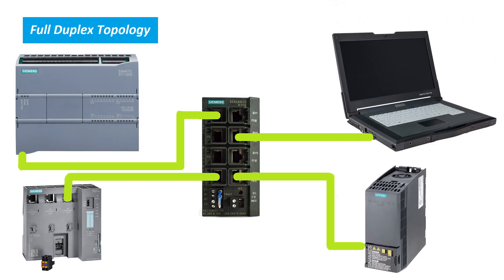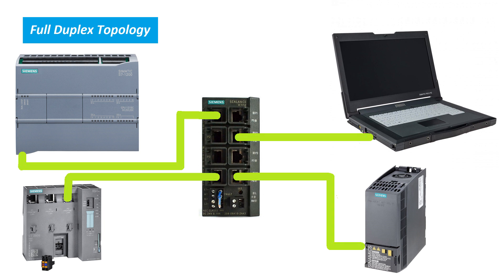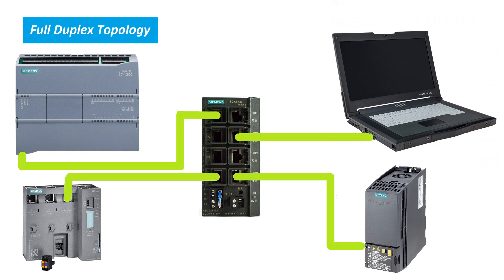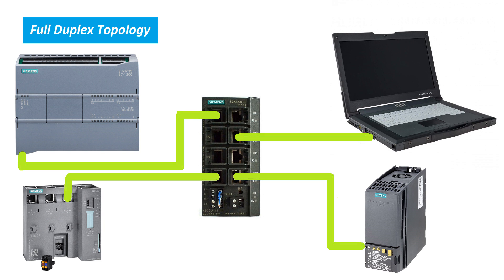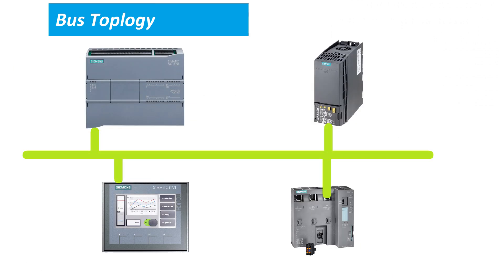When using faster Ethernet in full duplex mode with switches, we use a star topology between the switch and the devices. This allows more direct transmission paths for communication and fewer collisions, compared to bus topology where all devices share the same path.